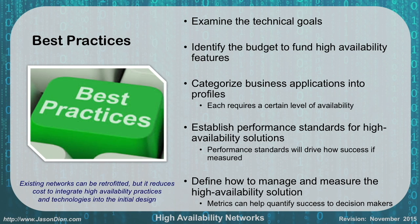Some best practices: first, examine your technical goals — money is finite. Second, identify your budget to fund high availability features up front, since it's cheaper to build it in initially than to retrofit later. Third, characterize your business applications into profiles, because each has a certain availability level. For instance, credit card processing may be the most critical thing for American Express, whereas a normal company might batch-process credit cards later and prioritize making the sale up front.